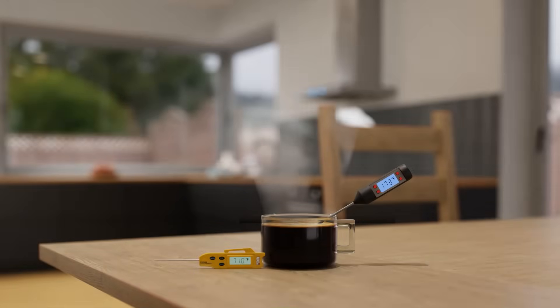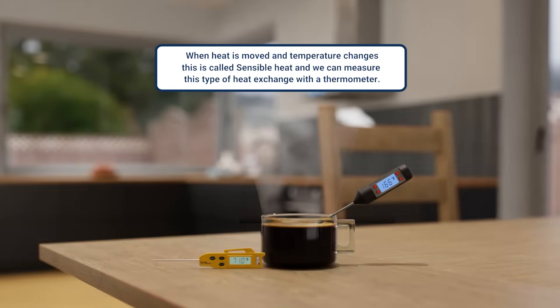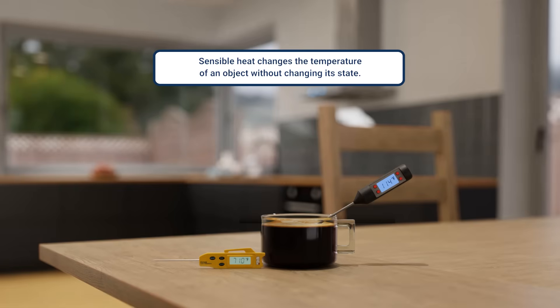When heat is moved and the temperature changes, this is called sensible heat, and we can measure this type of heat exchange with a thermometer. Sensible heat changes the temperature of an object without changing its state, like from liquid to vapor or vapor to liquid.